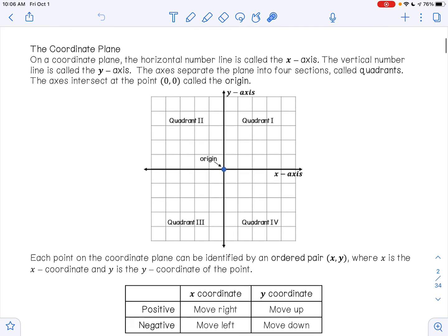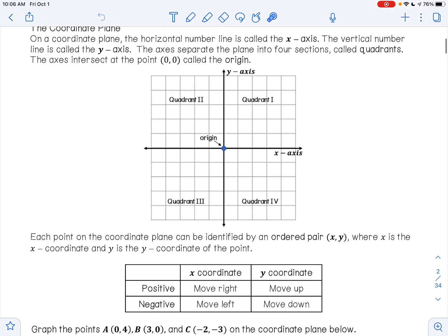Each point on the coordinate plane can be identified by an ordered pair (x, y), where x, the first number, is the x-coordinate, and y, the second number, is the y-coordinate of the point.